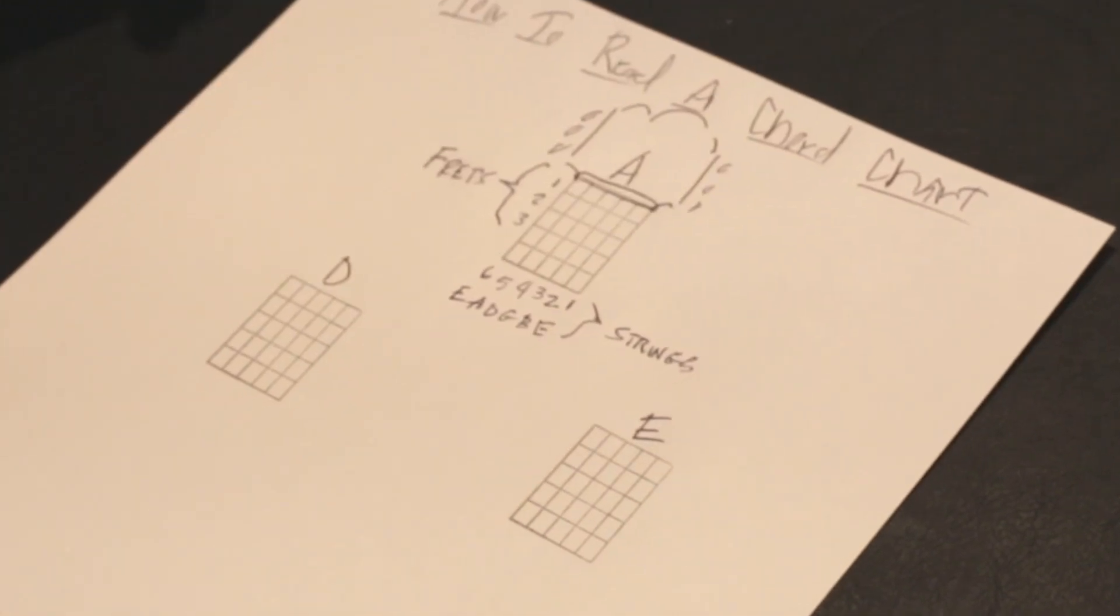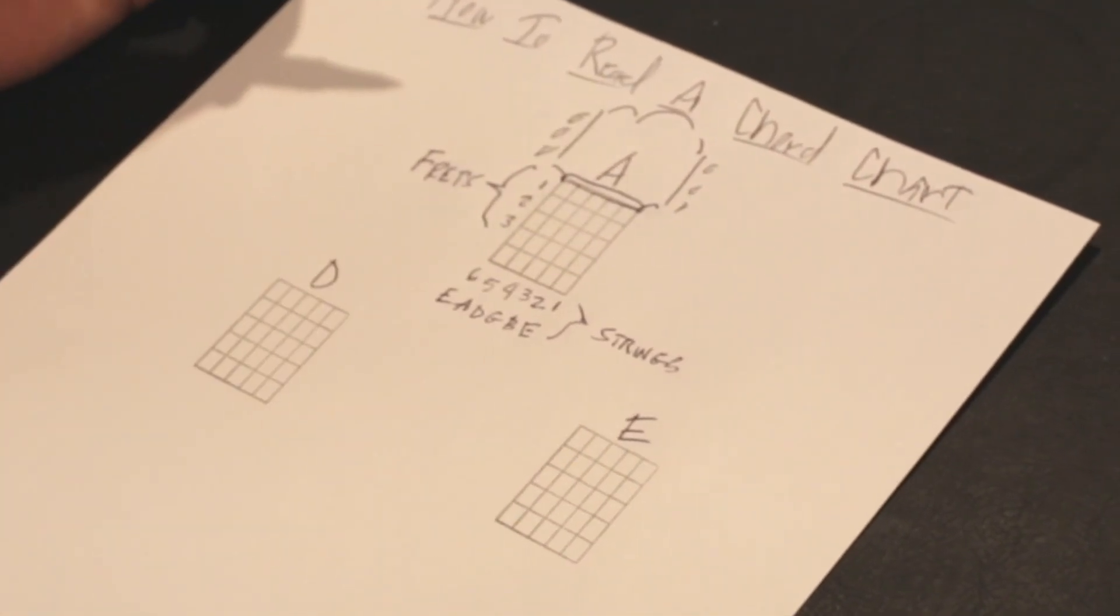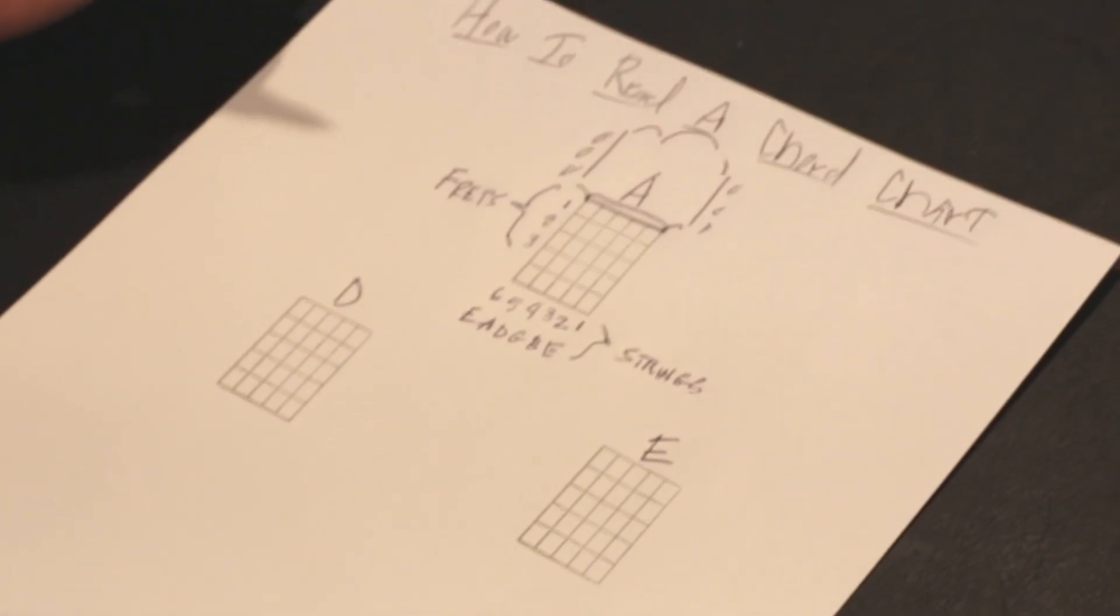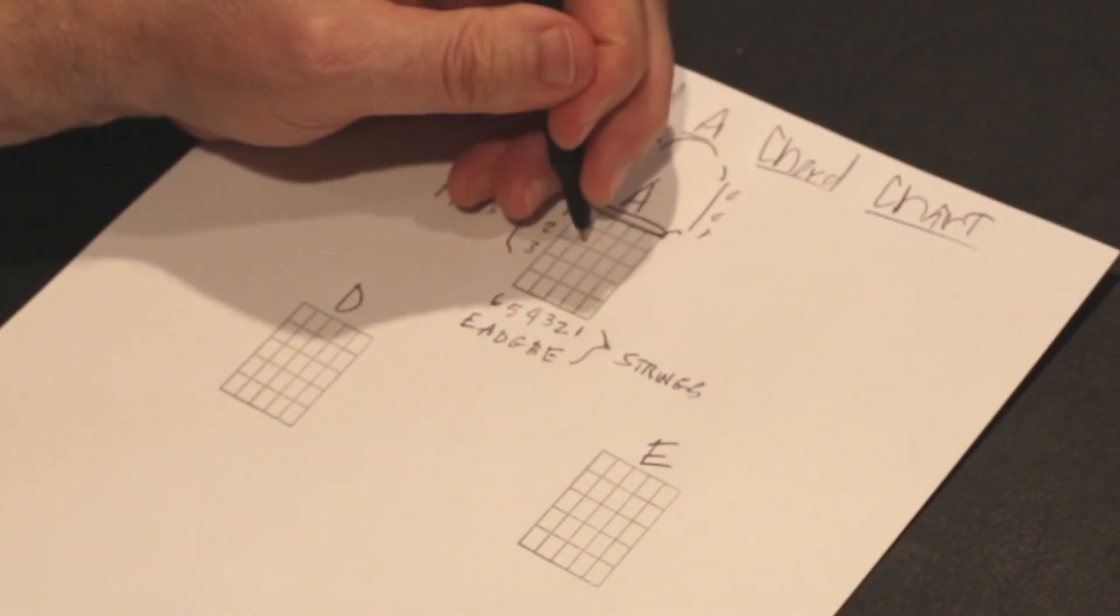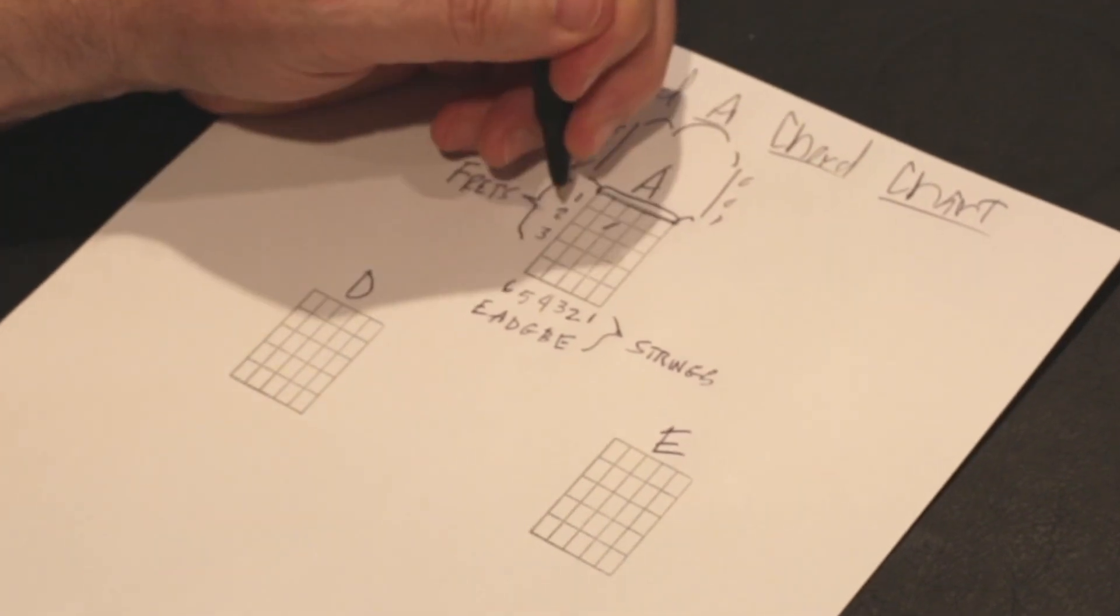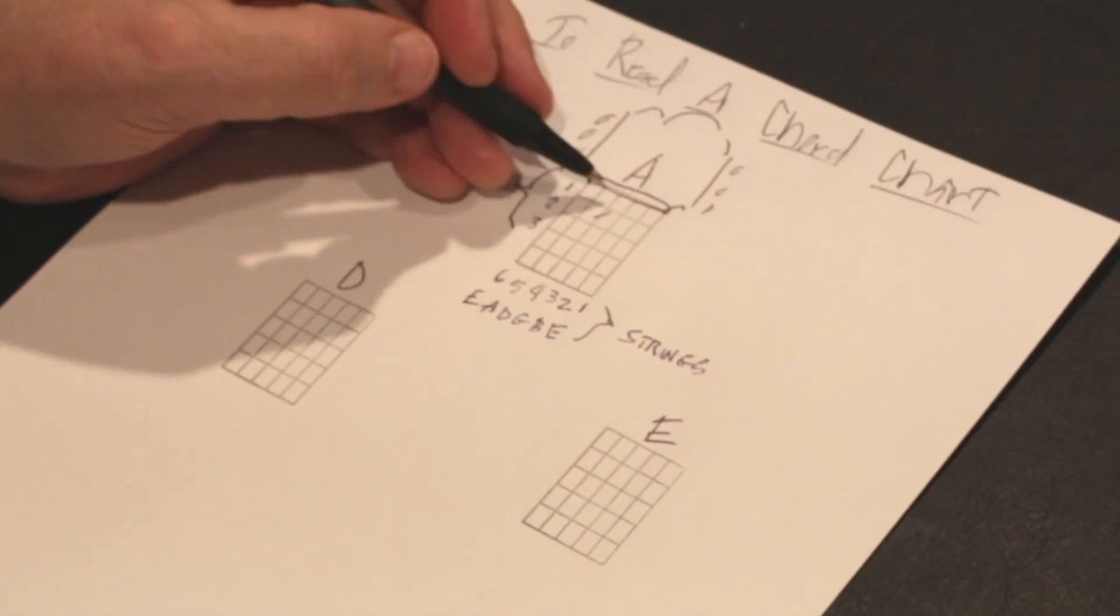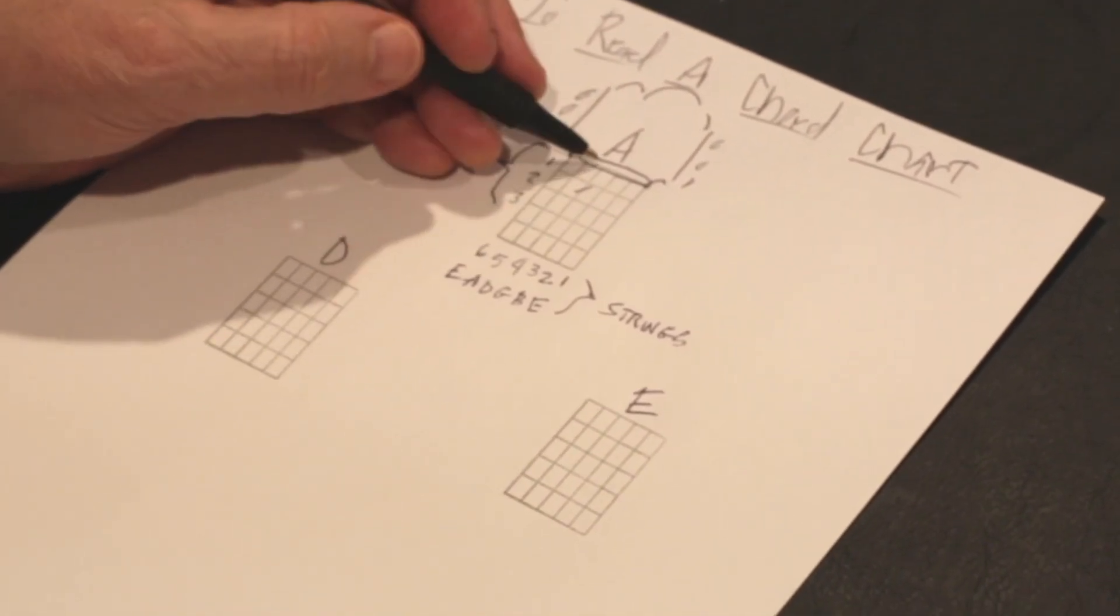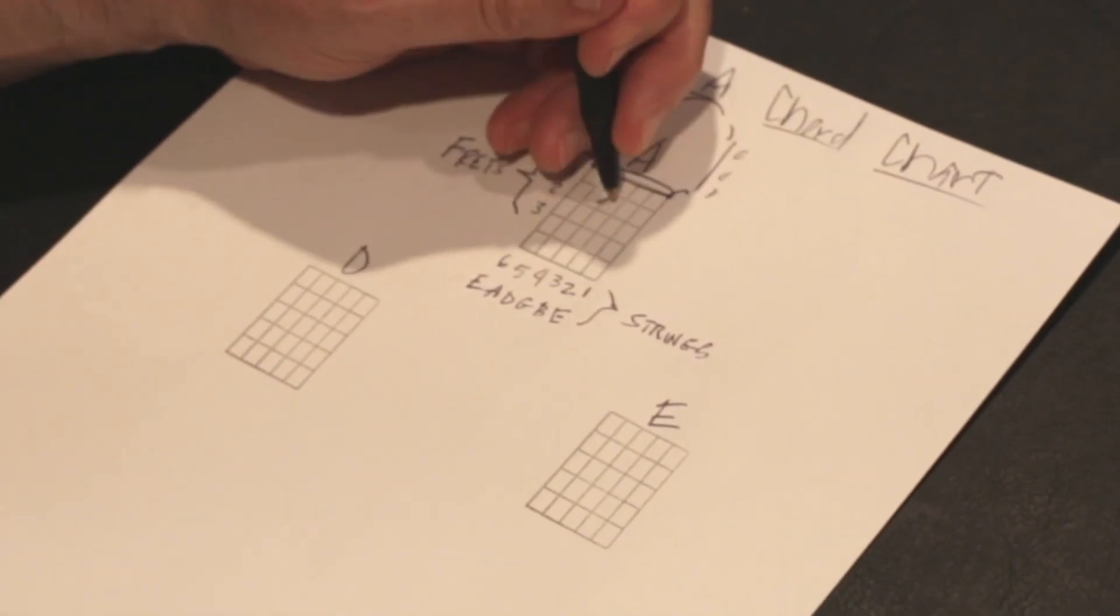And now what we're going to do is put our numbers in here on where our fingers go on our left hand, if you're a right-handed guitar player like most of us are. So your first finger goes right here on the second fret. What string is that on? Count from your right. One, two, three, four. So it's the fourth string, second fret. You put your first finger there.